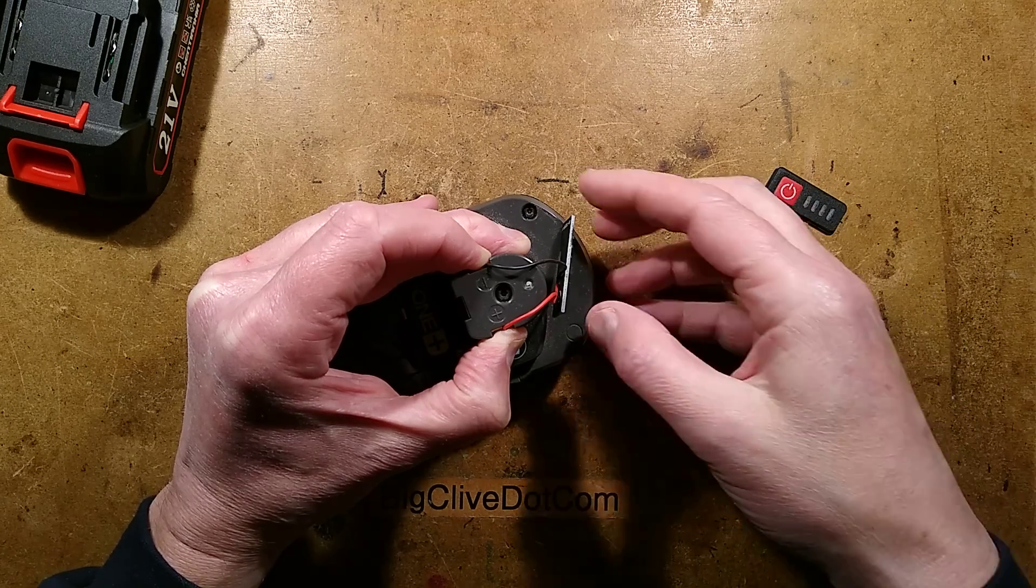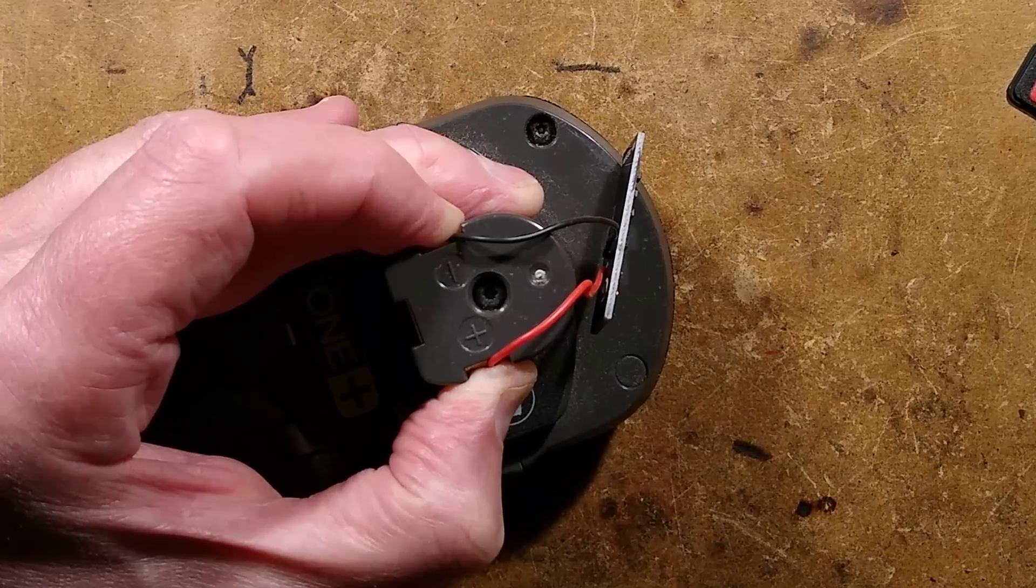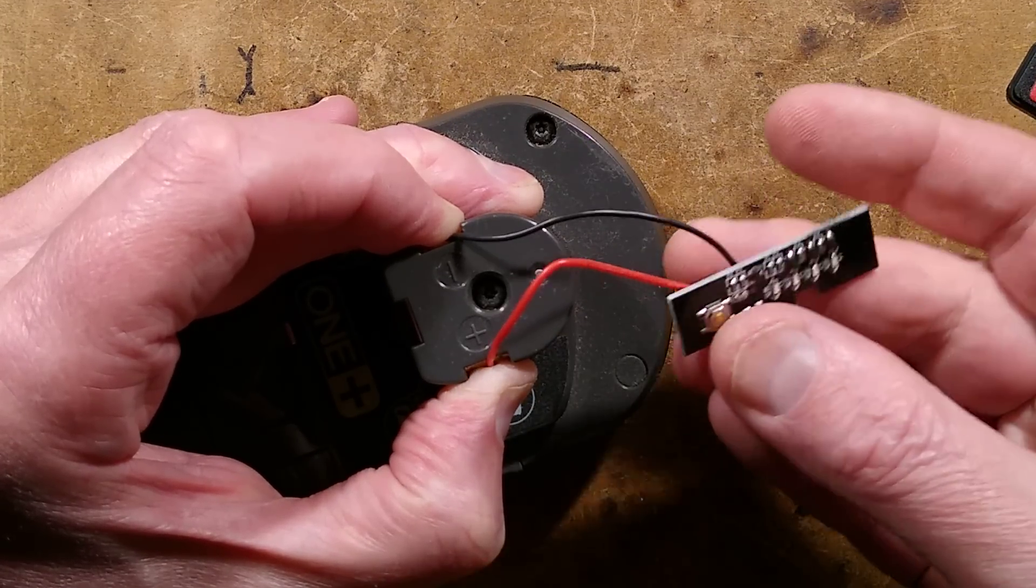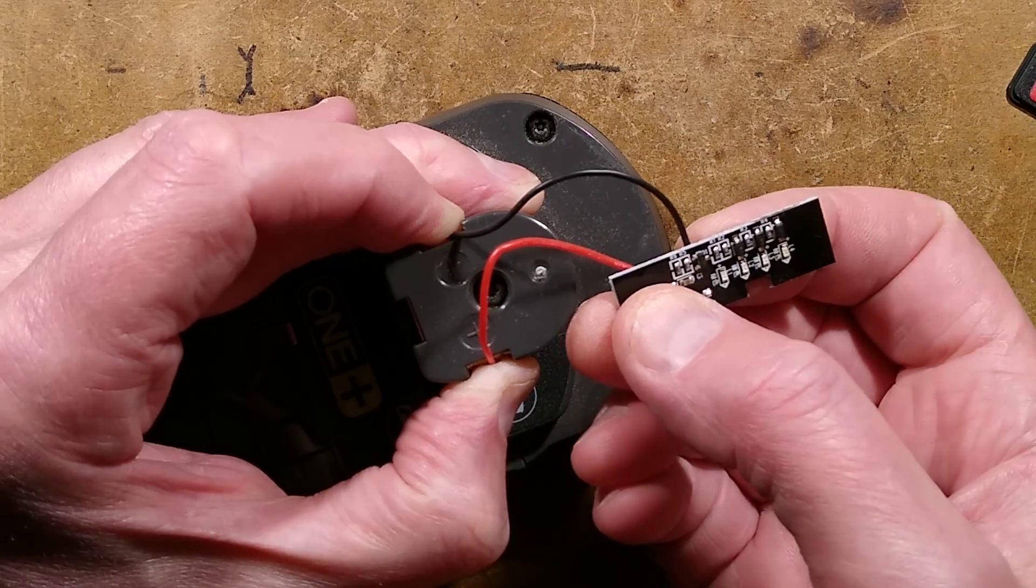Let's start this video with a demonstration of the device we're going to be looking at. I'll zoom down a bit so you can see it better. This is a little battery status indicator and I've currently got it just held across a Ryobi battery.